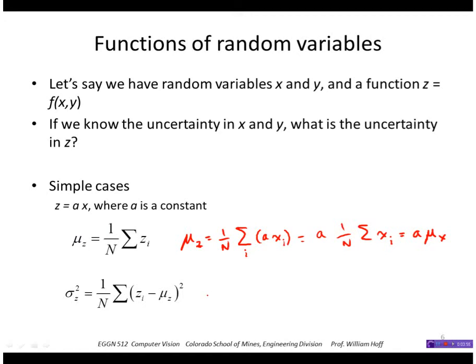The variance now, similarly, I can calculate using a xi, and the mean I said was a times mu x. So again, I bring a out.